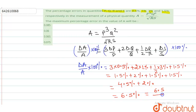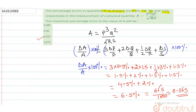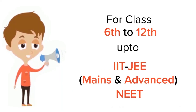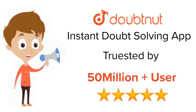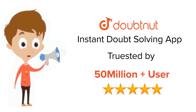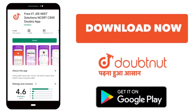So the maximum percentage error in A is 6.5%, which means option number 3 is correct. I hope you have got your answer. For class 6 to 12th, IIT JEE and NEET level problems, trusted by more than 5 crore students — download the DoubtNut app today.